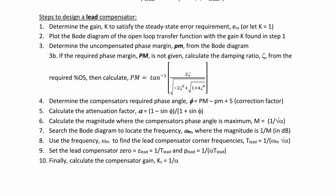Now let's review the steps to design a lead compensator. Step 1, determine the gain k to satisfy the steady state error requirement or just let k equal 1. Step 2, plot the Bode diagram of the open loop transfer function using the value of gain k found in step 1. Step 3, determine the uncompensated phase margin PM from the Bode diagram. If the required phase margin is not given, then calculate the damping ratio ζ from the required percent overshoot and then calculate the phase margin by using arctan(2ζ / √(-2ζ² + √(1 + 4ζ⁴))).